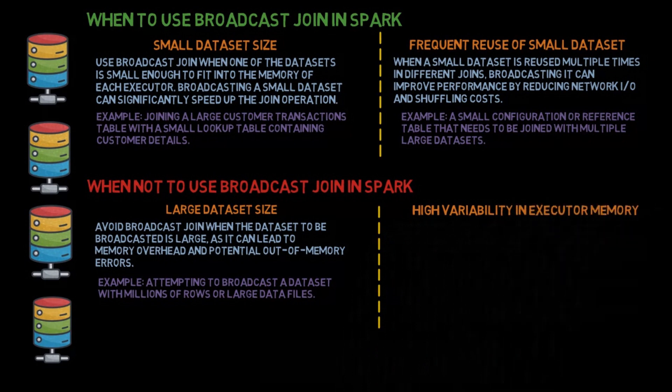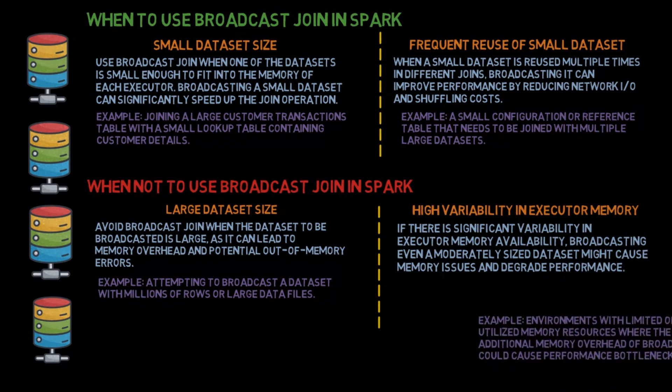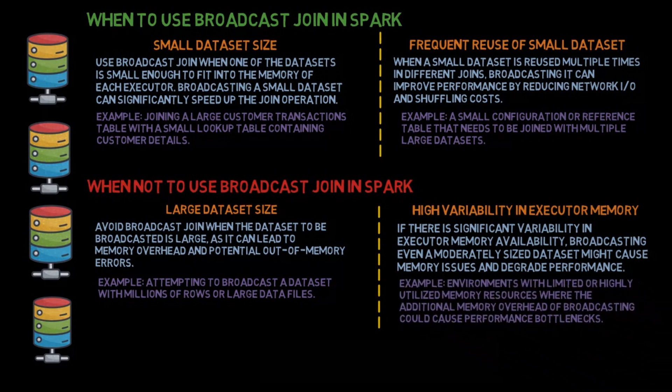High variability in executor memory: If there is significant variability in executor memory availability, broadcasting even a moderately sized dataset might cause memory issues and degrade performance. Example: Environments with limited or highly utilized memory resources where the additional memory overhead of broadcasting could cause performance bottlenecks.